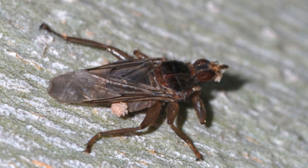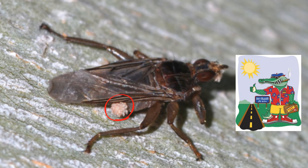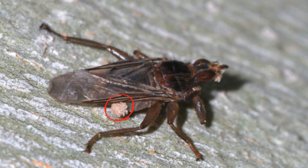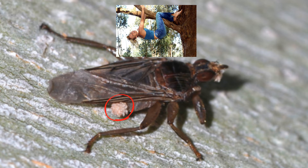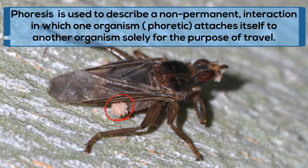Next, you have these tiny little mites, and they hitch a ride on flies. The mites are equipped with some type of method to grip onto the insect, and they get transported around. This phoretic mite is just a hitchhiker and does not feed during this time of being carried around. The mites receive transportation, but the fly is neither helped nor harmed.